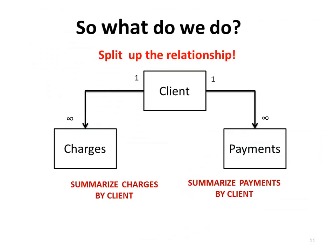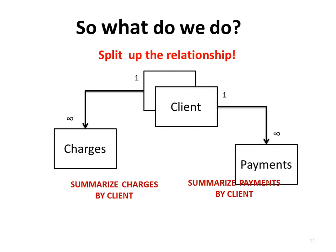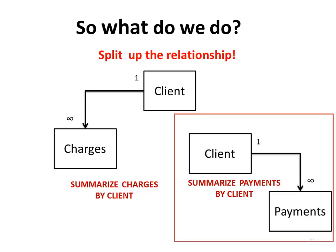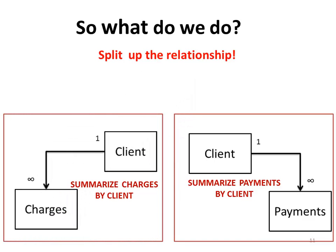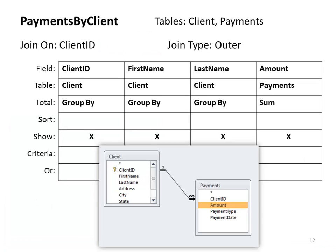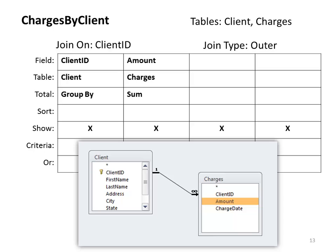So how do we create this query? We need to create it in multiple steps. We need to create a query that will do an outer join between the client and payments table, summarizing the payments by client. We also need to create another query that takes the client and charges table with an outer join, summarizing the charges by the client. The QBE grid for payments by client uses an outer join, grouping by client ID, first name, and last name, and summing the amount on the payments table. For charges by client, we group by client ID and sum the charges — we don't include first name and last name here since we'll use both queries as input to our final query.